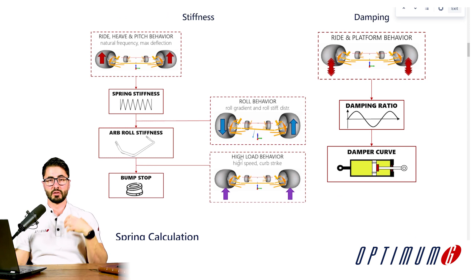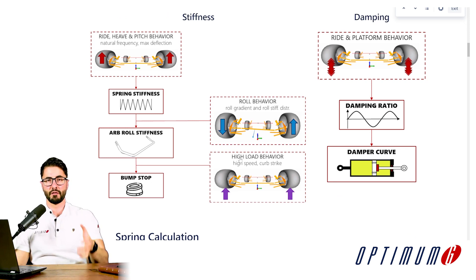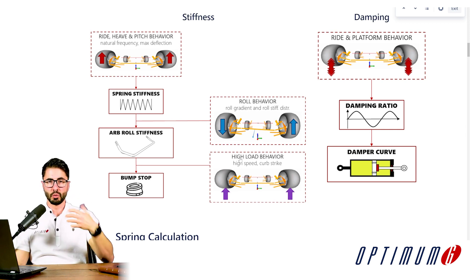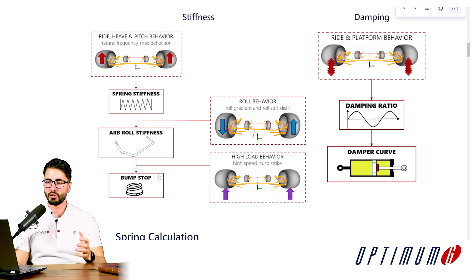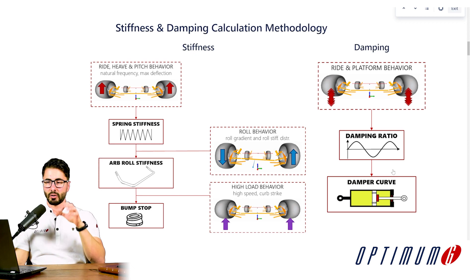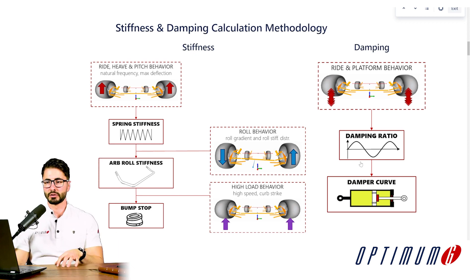Lastly, you also have to define what is the expected behavior of your vehicle under high loads — so for example, very high speeds or heavy braking. Do you want your car to behave differently? If so, then you should be designing your bump stops. Alright, enough of the overview — let's tackle each of these specific areas in detail.